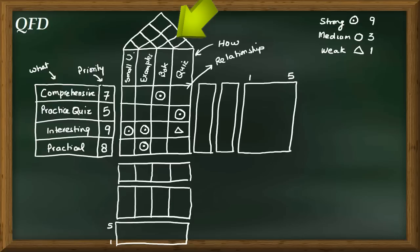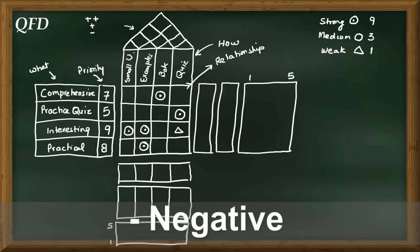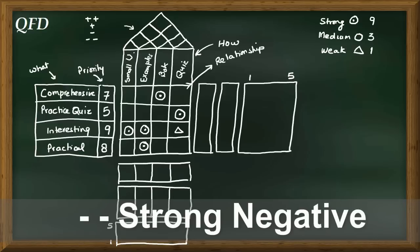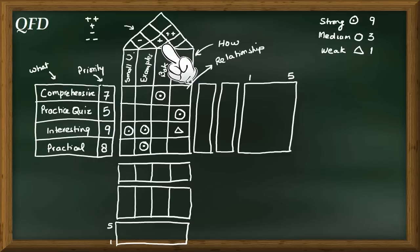At the top roof of the House of Quality we address the correlation between one 'How' and another 'How'. Strong positive correlation is shown by plus-plus, positive correlation by plus, negative correlation by minus, and strong negative correlation by double minus. For example, having examples and having quizzes has a strong positive correlation. Having smaller units and having examples has a negative correlation because adding examples makes units longer. Examples and body of knowledge have a moderate positive correlation, and body of knowledge and quizzes have a strong positive correlation.